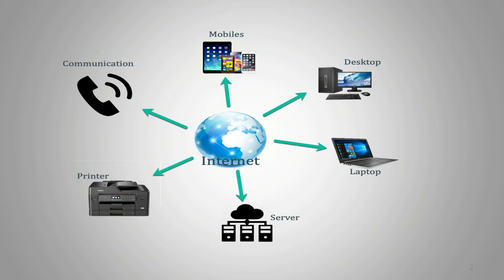This is a simple diagram of internet. Before you understand internet, you should understand what is a network. When you connect electronic gadgets or electronic items together, that is done through the use of a network. In this diagram, we see that millions of computers are connected to one another through the use of a network. This network is known as internet.